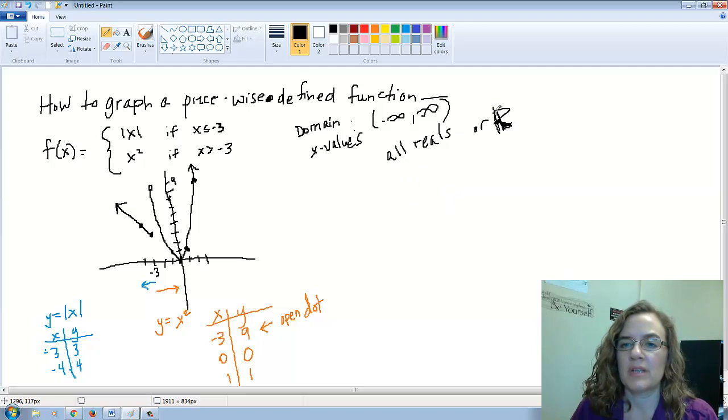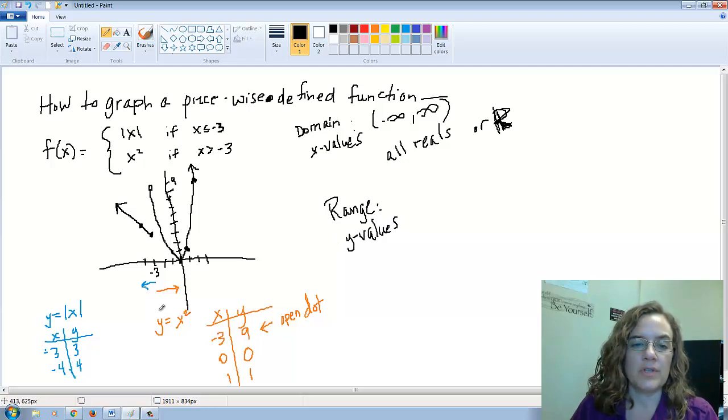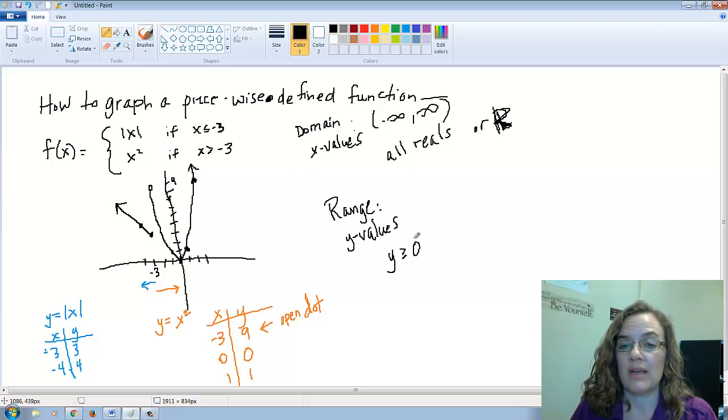Now the range is going to be a little strange, but remember it's always going to be the y values. So if I'm thinking of the y values, I don't have anything down here, but then I start right here at zero, so I know that y is going to be greater than or equal to zero. The only other problem point would be here at nine, but turns out since it's actually here, we're good to go and we can just go everything greater than zero. So that would be zero to infinity.